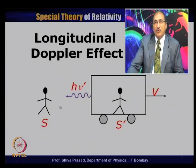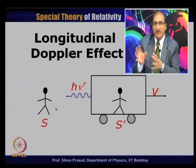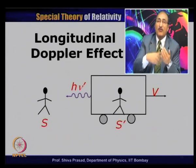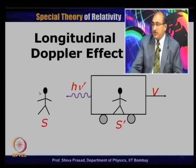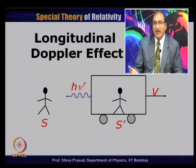To find the frequency of light in frame S, I need to find the energy of this photon in S frame — I just need an energy-momentum transformation. Since photon is like any other particle, the same transformation that applies to any particle applies to the photon. The Doppler effect for light can be treated extremely simply: all I have to do is apply an energy transformation.